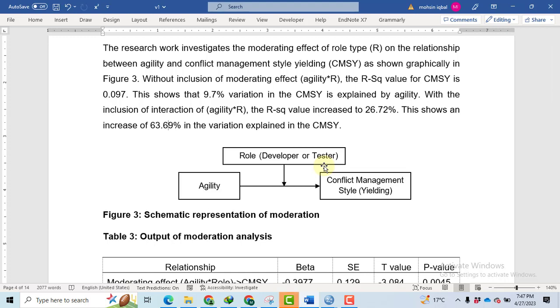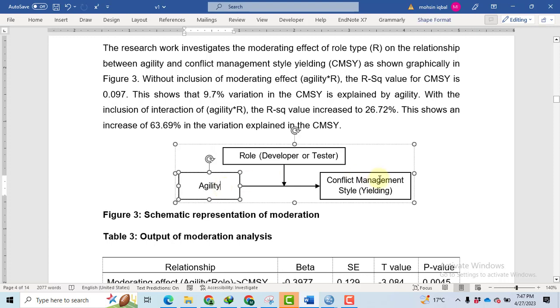Bismillahirrahmanirrahim. In this video, I will discuss the moderation analysis using a categorical moderator. We have three variables in this research work: agility as independent variable, conflict management style as dependent variable, and a moderator role that has two levels, developer or tester.